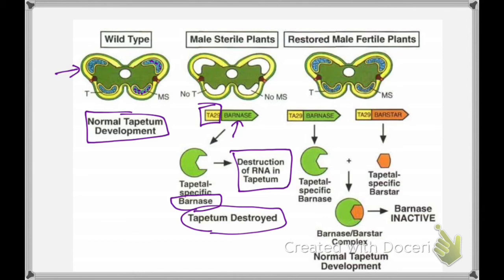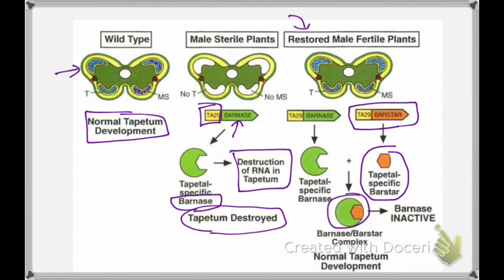We can restore male fertility by introducing another gene, barstar, with the ta29 tapetum-specific promoter. This barstar will block the action of barnase and thus normal activity is restored. We introduce barnase to stop tapetum production, and if we do genetic engineering with barstar in the same plant, we can restore normal tapetum development.